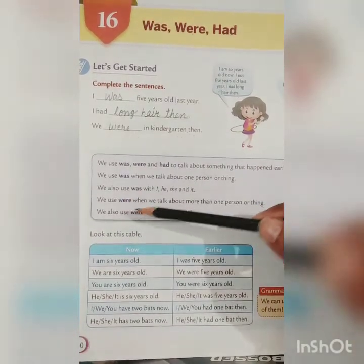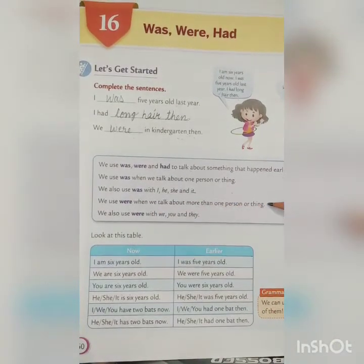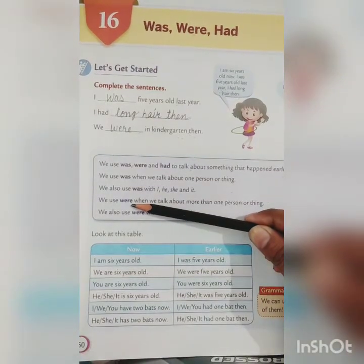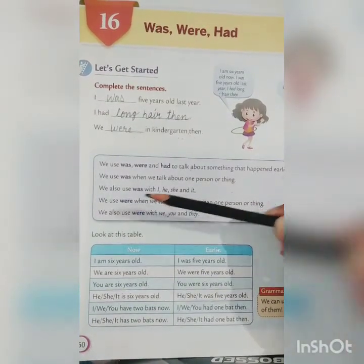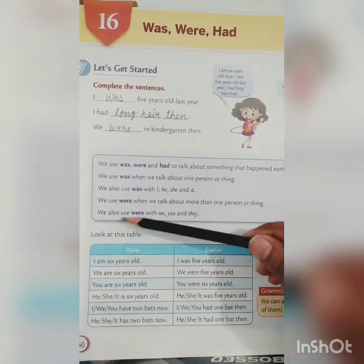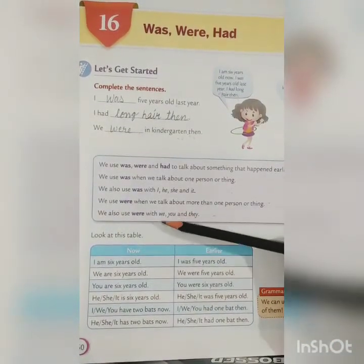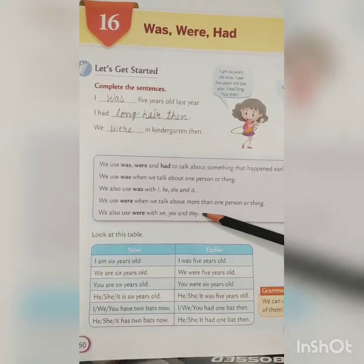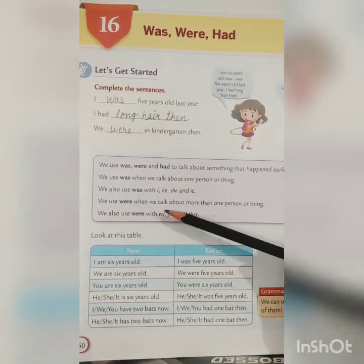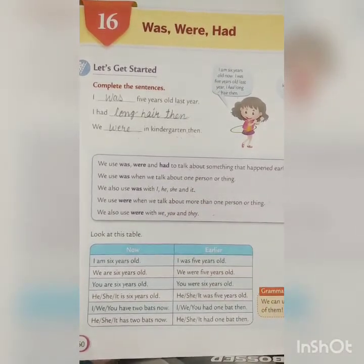We use 'were' when we talk about more than one person or thing — that means with plural words or plural pronouns. We also use 'were' with we, you, and they. Yes, we all know we, you, and they are pronouns. So: we — were, you — were, they — were.